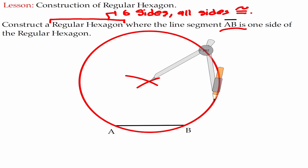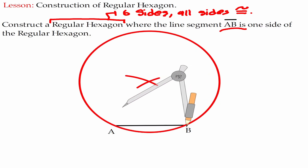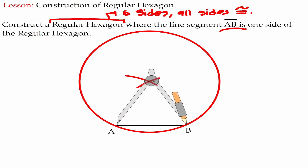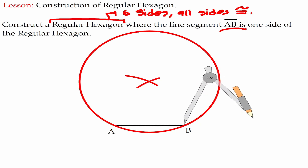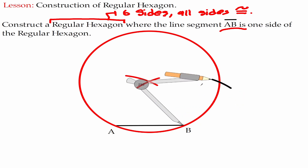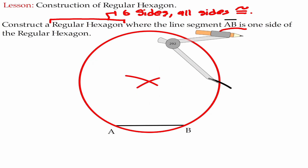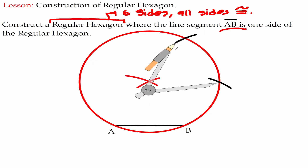Now that we have that circle, let me go back and measure the distance from A to B, which notice that it's still the same. Using the same distance, move it to B and make a mark on your circle. We're going to repeat the same process. Now let me move my metal leg and put it back on the mark and create a new mark.